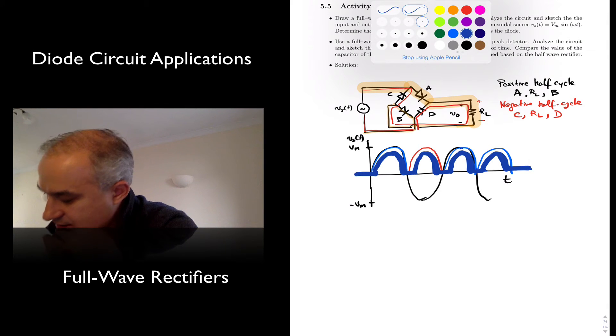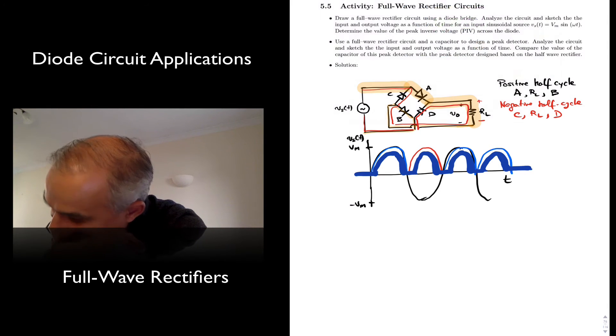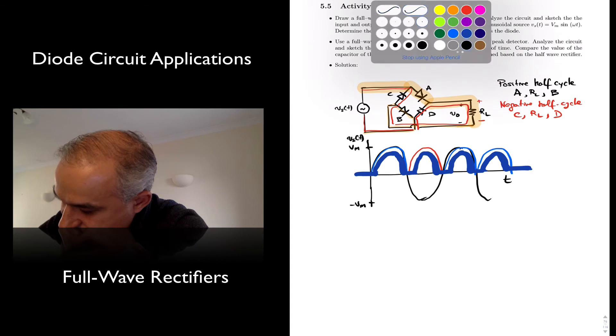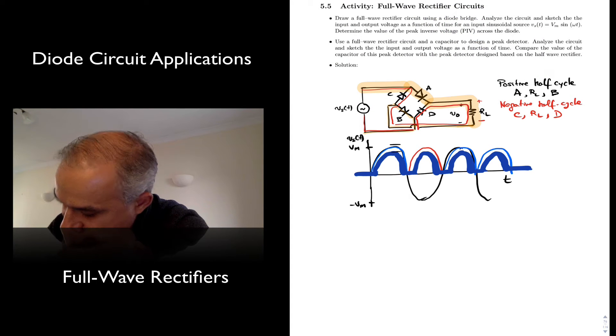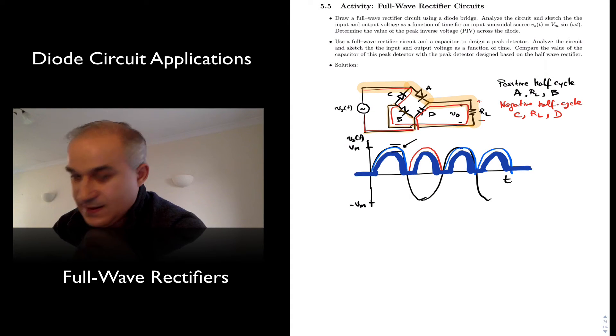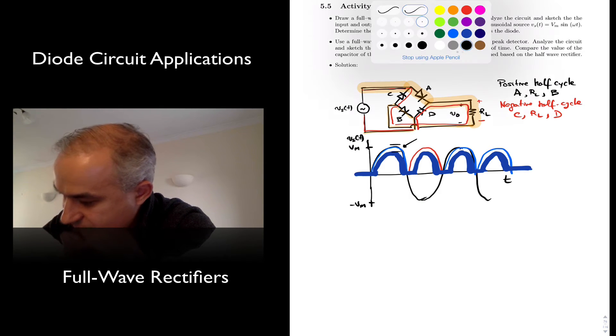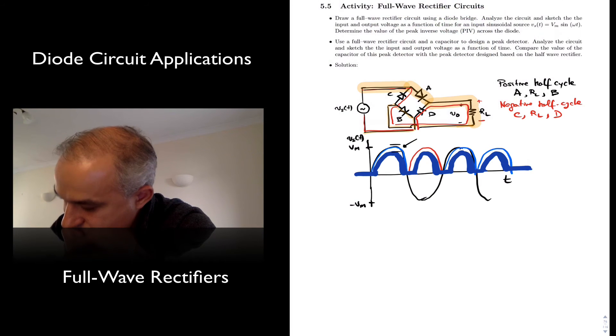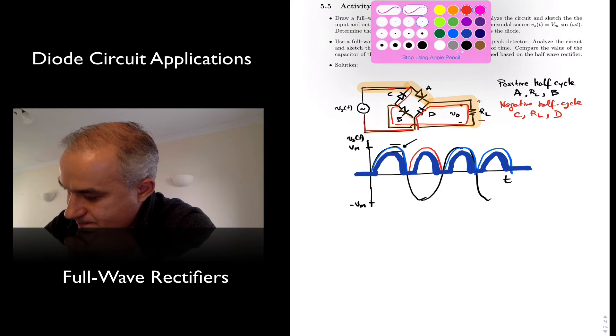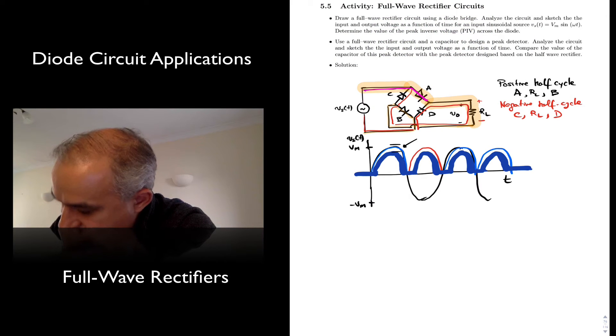Now let's do a little bit more analysis. So we already determined that from here to here, right, we are going to have two diode drops. Let's look at the positive side. Here we go. Here. One diode drop. Two diode drops.